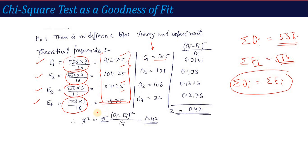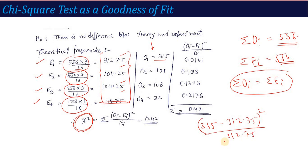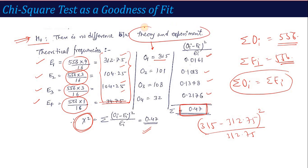Now with observed frequency given and expected frequency calculated, we compute the Chi-Square quantity as the summation of (OI minus EI) whole square divided by EI. For example, for O1: (315 minus 312.75) squared divided by 312.75. Do this for each value and sum them — this summation is the Chi-Square calculated value. Before this table, write H0: there is no difference between theoretical and observed frequency.